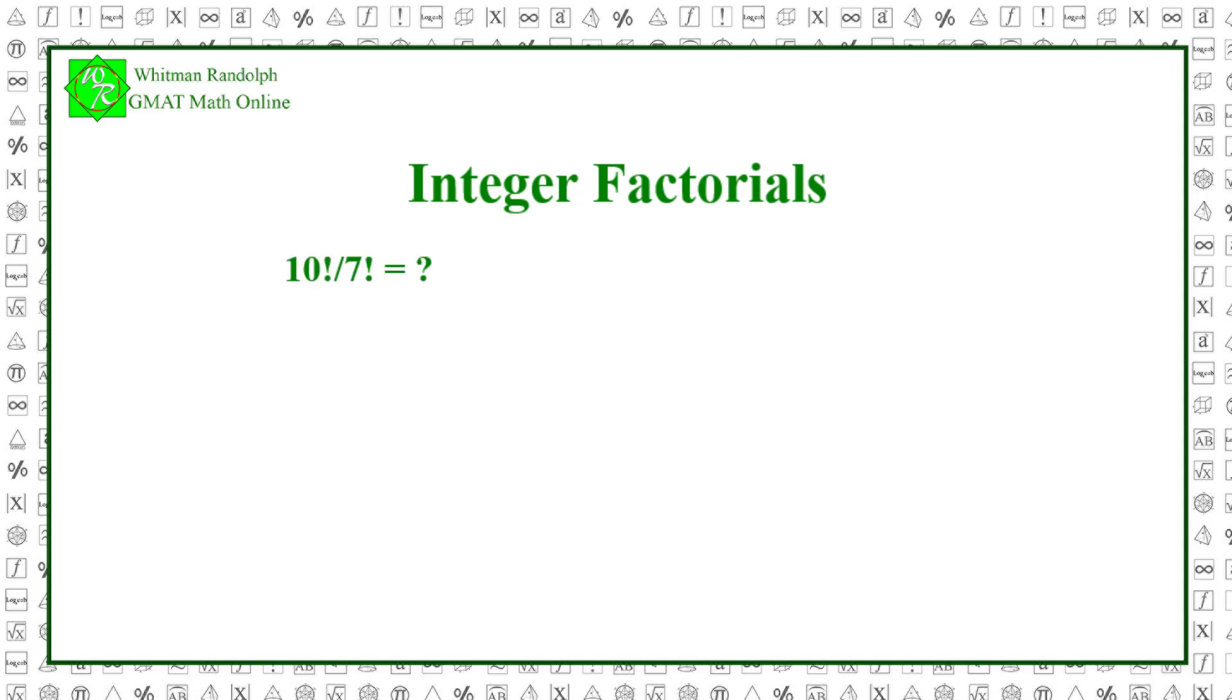10 factorial divided by 7 factorial equals what? This expression is equal to 10 times 9 times 8 and so forth down to 1 divided by 7 times 6 and so forth down to 1.